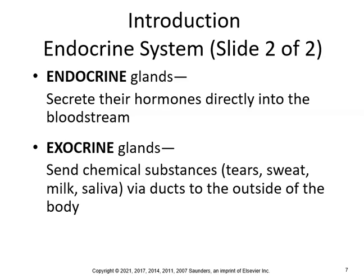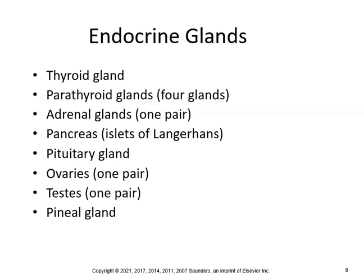The endocrine glands secrete their hormones directly into the bloodstream, but the exocrine glands send chemical substances such as tears, sweat, milk, and saliva via ducts to the outside of the body. The pancreas is an interesting organ because it has both an endocrine and an exocrine function. The endocrine glands include: the thyroid gland, parathyroid glands, adrenal glands, the pancreas — which has the islets of Langerhans that regulate insulin and glucagon — the pituitary gland, ovaries, testes, and the pineal gland.